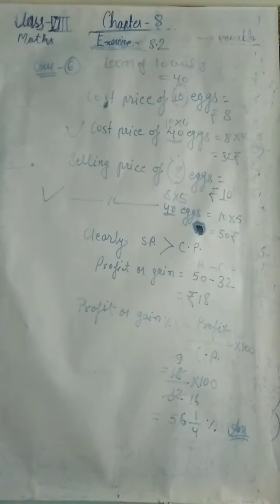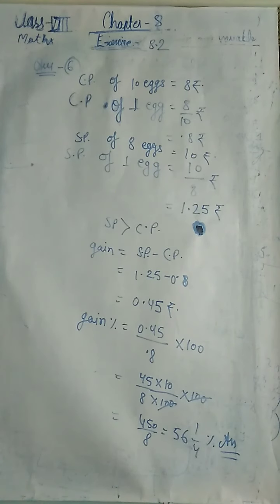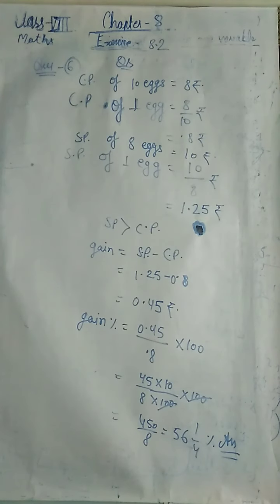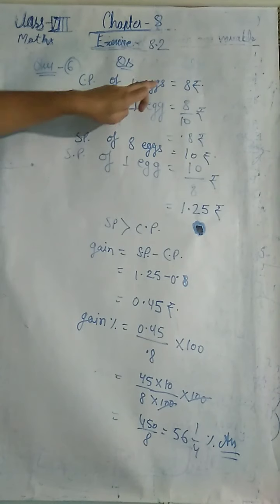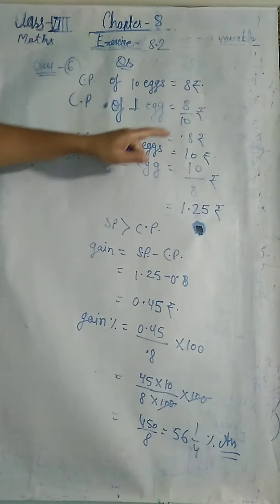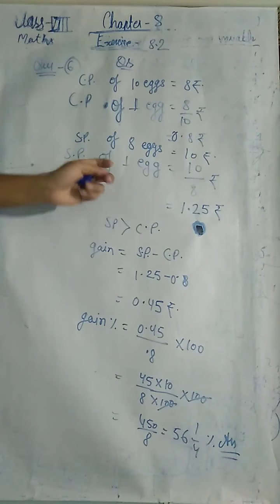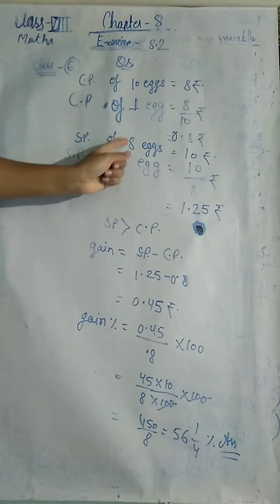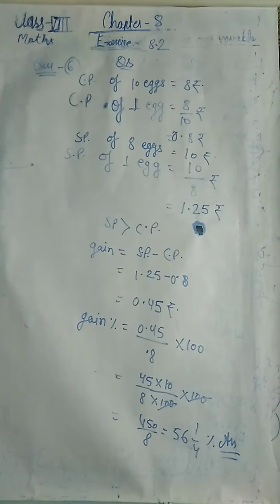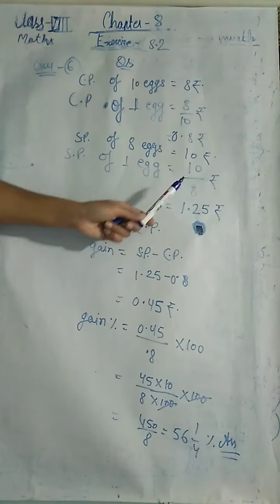There is a second method for question six. Here I found the value of 1x instead of 40x. CP of 10x = Rs. 8, so CP of 1x = 8/10 = Rs. 0.8. SP of 8x = Rs. 10, so SP of 1x = 10/8 = Rs. 1.25.